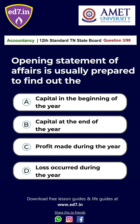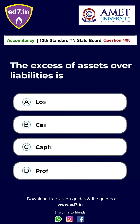Question 3: Opening statement of affairs is usually prepared to find out the — option A: capital in the beginning of the year, option B: capital at the end of the year, option C: profit made during the year, option D: loss occurred during the year. The answer is option A: capital in the beginning of the year.